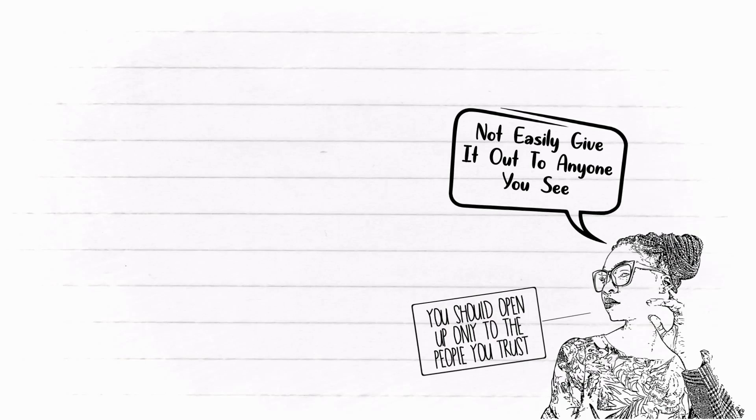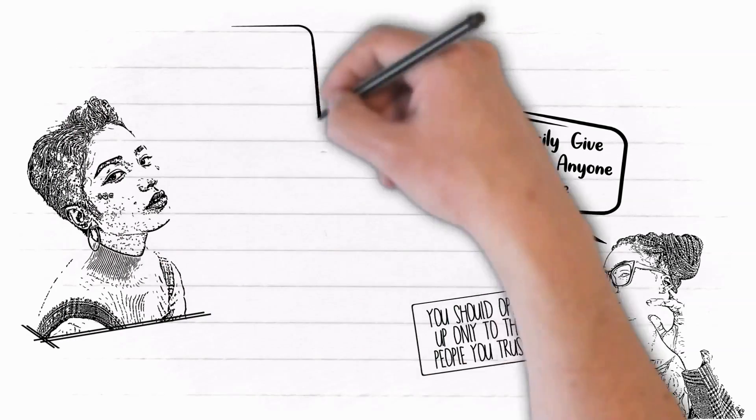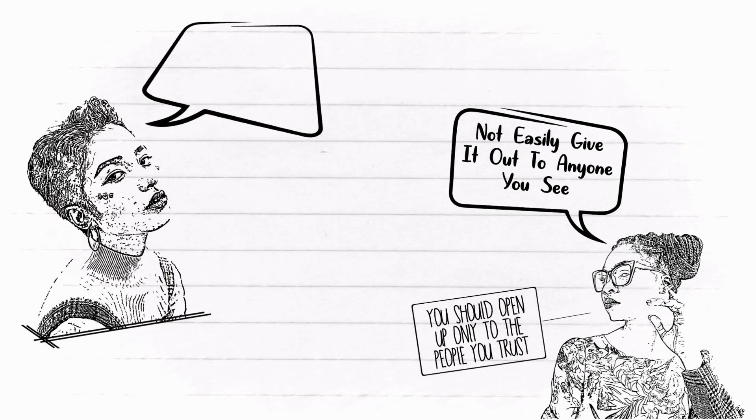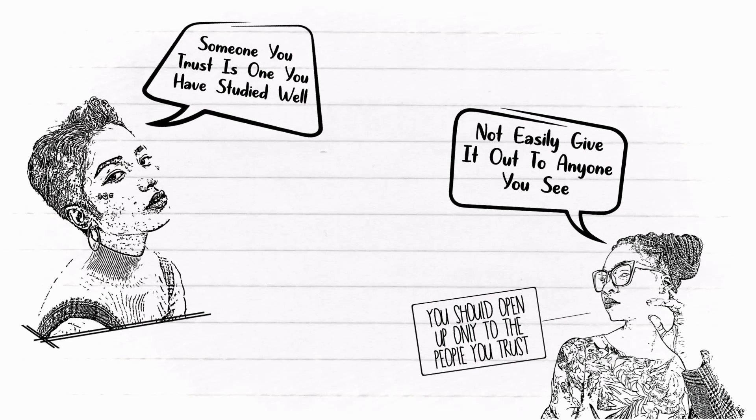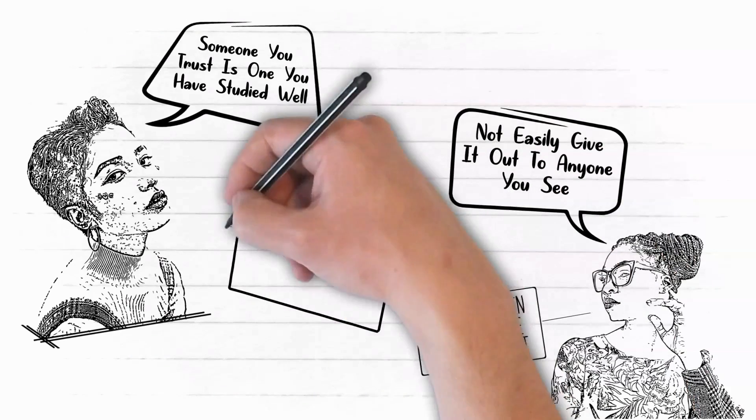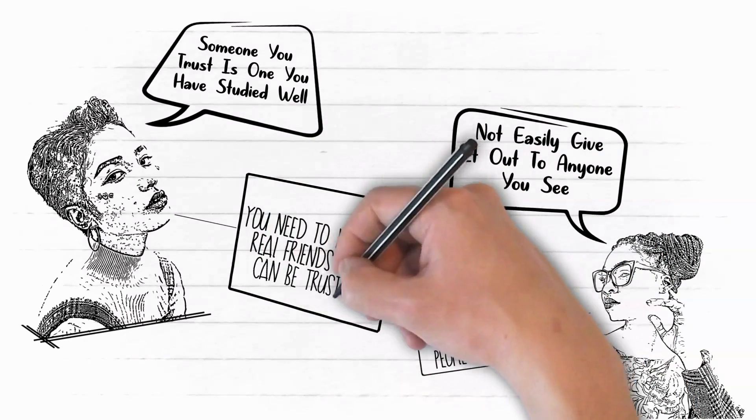When we talk about building trust, it must not be someone who you have known for a very long time, because even people you became friends with from your childhood can still backbite you. Someone you trust is one you have studied well, and then you have this rest when you are around them. It takes discernment to understand that fully. In essence, if you must go far, you need to identify real friends that can be trusted.